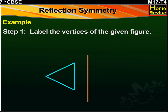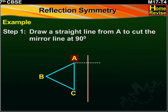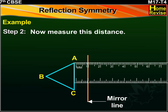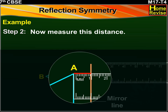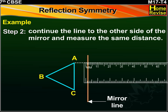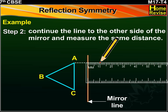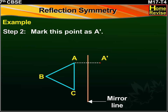First, we label the vertices of this given figure as A, B and C. Then, draw a straight line from A to cut the mirror line at 90 degrees. Now, measure the distance between vertex A and the mirror line. We continue the line to the other side of the mirror and measure the same distance on the other side. Mark this point as A'.